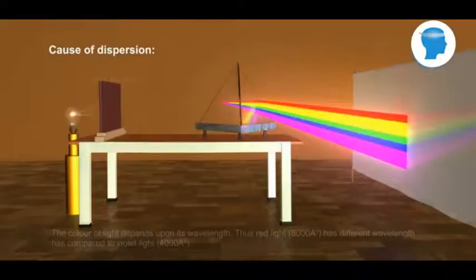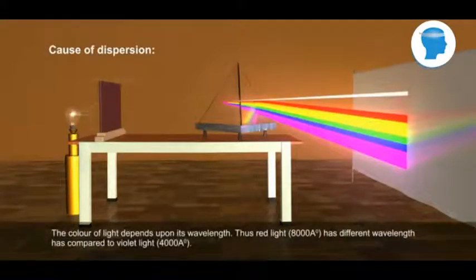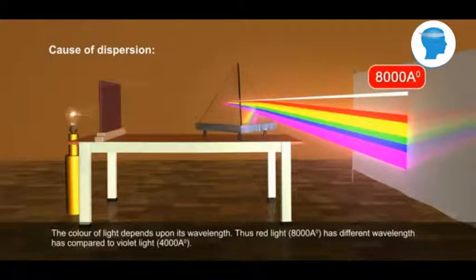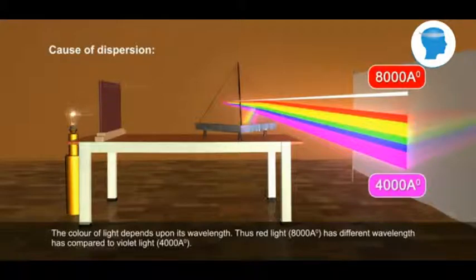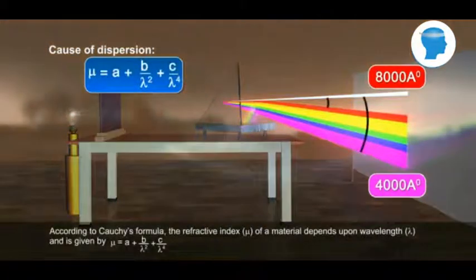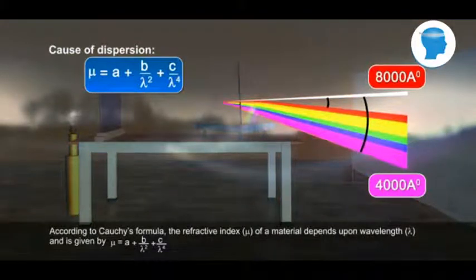Cause of dispersion. The colour of light depends upon its wavelength. Thus, red light, 8,000 angstroms, has different wavelength as compared to violet light, 4,000 angstroms.